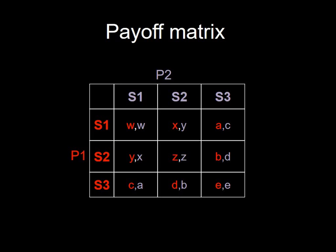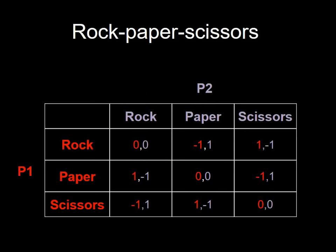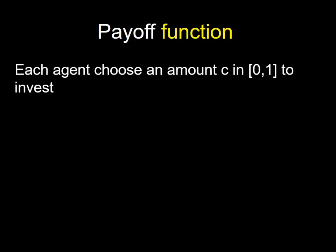Payoff matrices can have more than two options. With three strategies, you fill in all the cells of a three-by-three matrix. Rock-paper-scissors is an example: if both play rock, it's a tie and no one gets anything; rock loses to paper, so player one playing rock against player two playing paper gives player one minus one and player two plus one; rock beats scissors, giving the opposite.